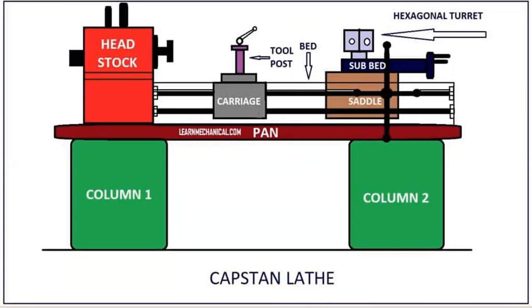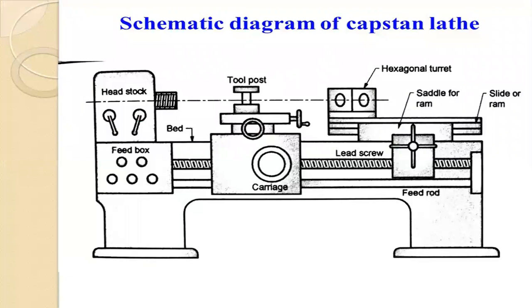How do we manufacture this capstan lathe? The bed, column one, and column two are larger parts manufactured using the casting process. Finishing operations are performed afterward. Smaller parts such as the lead screw, feed box, levers, carriage, and feed rod are manufactured using different machining processes.